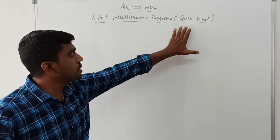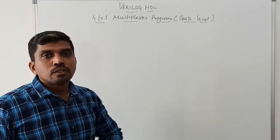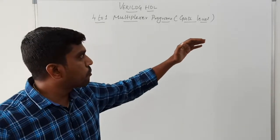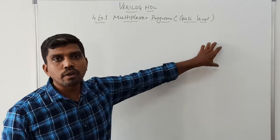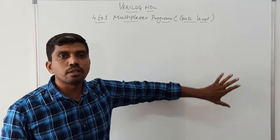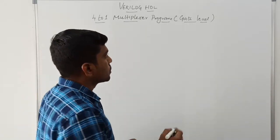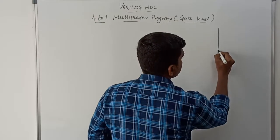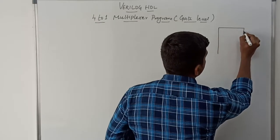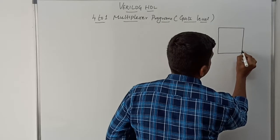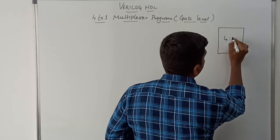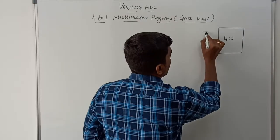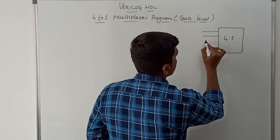This programming concept uses the gate level method. Before I start to write the program, first I draw the block diagram of the 4-to-1 MUX. Then that block diagram is converted into a logical diagram. So first I draw the block diagram for the 4-to-1 MUX, which has 4 input lines.